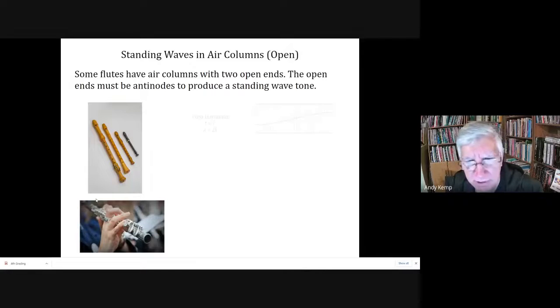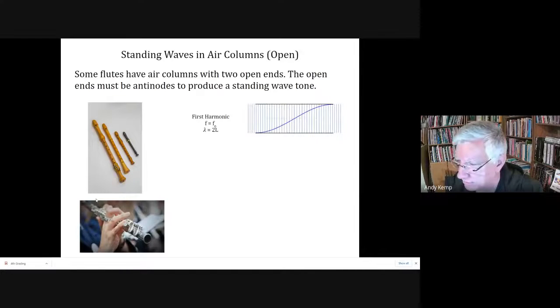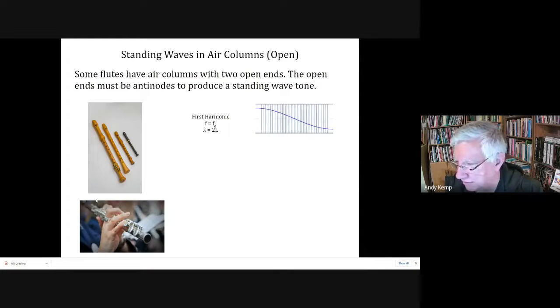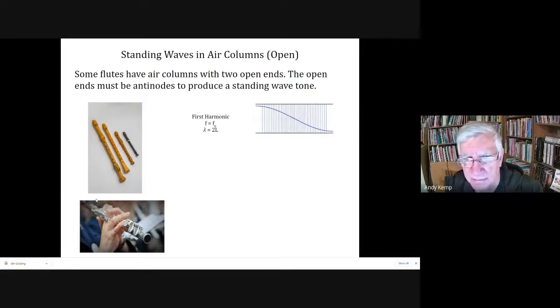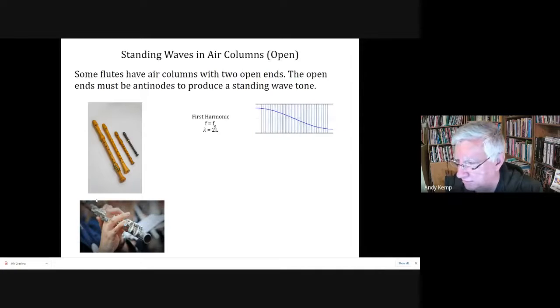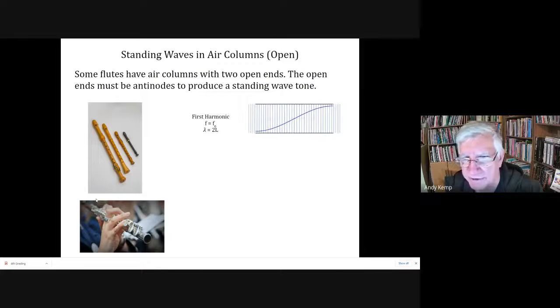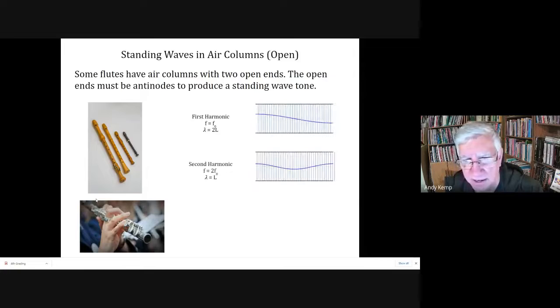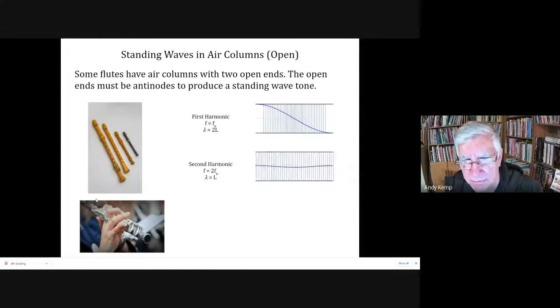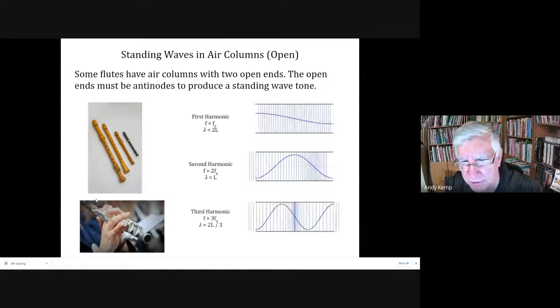At a flute, you can actually have two open ends. It may not be all the way on the end, it may be one of the holes along the length of the body. But because you can have two open ends, the first harmonic is one full wavelength. So that's the fundamental frequency, is a full wavelength. And so the second harmonic then would look like that, and the third harmonic would look like that.